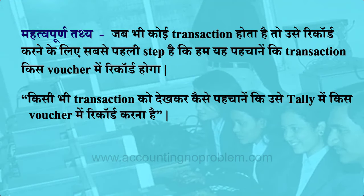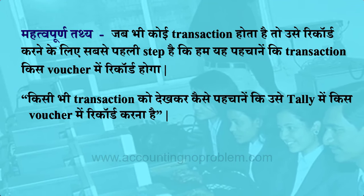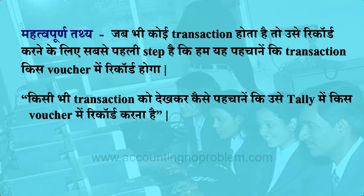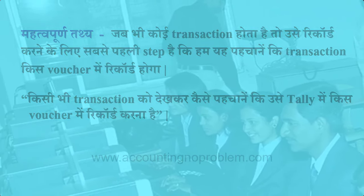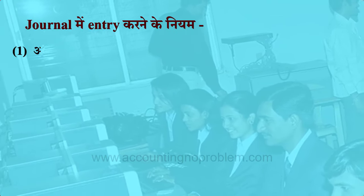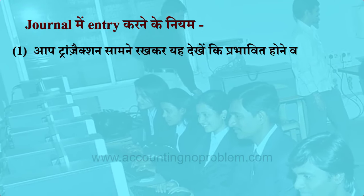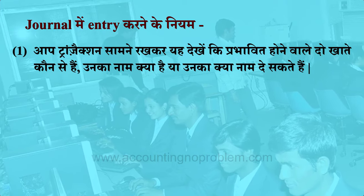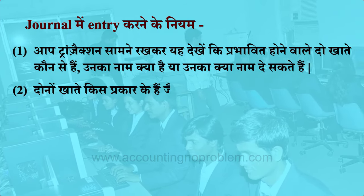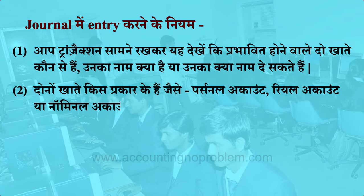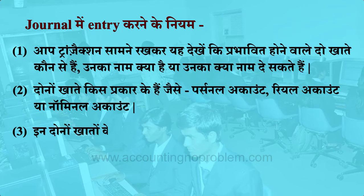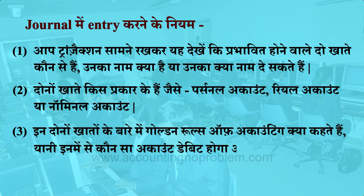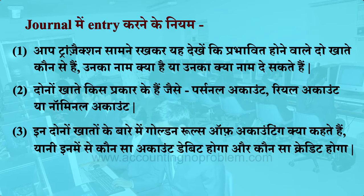Receipt Voucher में काम करने से पहले याद दिला दें कि Manual Accounting में Journal Entry के जो नियम बताए थे, वो ही नियम Tally के Vouchers पर भी लागू होंगे। पहला नियम: Transaction देखकर प्रभावित होने वाले दो खातों के नाम पहचानें। दूसरा नियम: दोनों खाते किस प्रकार के हैं — Personal Account, Real Account या Nominal Account। तीसरा नियम: Golden Rules of Accounting के अनुसार कौन सा Account Debit होगा और कौन सा Credit।